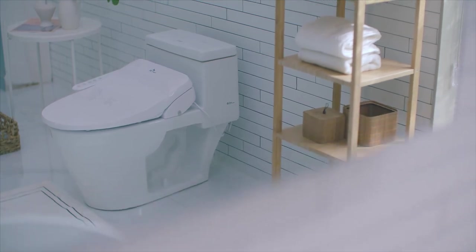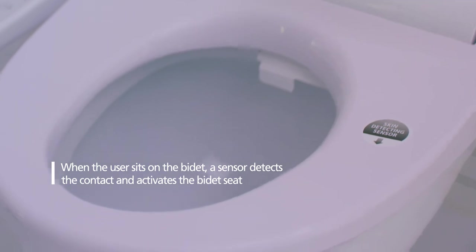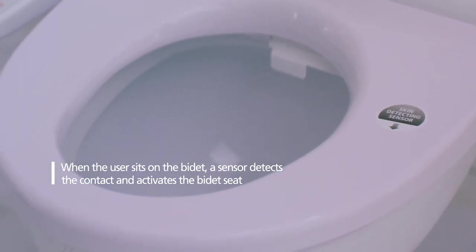If necessary, use the enclosed cable ties to arrange the lines. When the user sits on the bidet, a sensor detects the contact and activates the bidet seat.